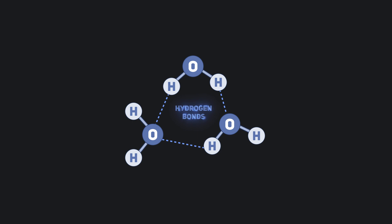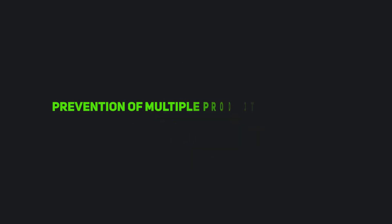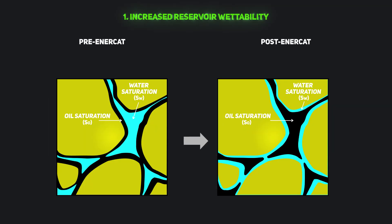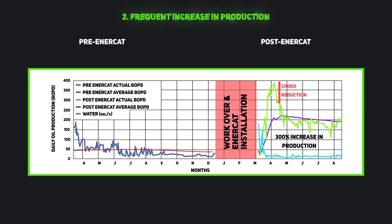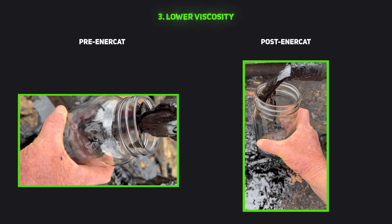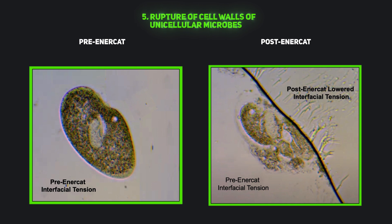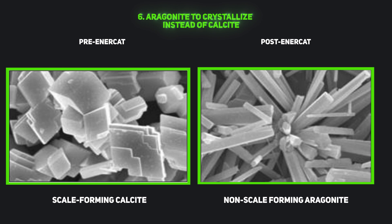It also decreases water's hydrogen bond strength at the quantum nuclear level, by causing the hydrogen bond lengths and angles to change, affecting the quantum proton delocalization. This decreases interfacial tension, resulting in increased reservoir wettability, a frequent increase in production, lower viscosity, breaking or prevention of emulsions, the rupture of cell walls of unicellular microbes, and causing aragonite to crystallize instead of calcite.